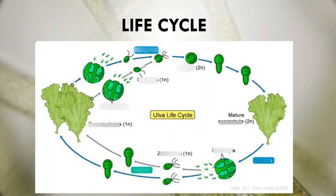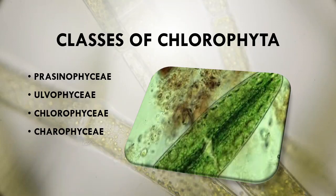Life cycle: you can see in the diagram how the cell reproduces. Both male and female gametes fuse together to form a zygote. After zygote formation, an embryo is formed, and the embryo will develop into a new plant body.